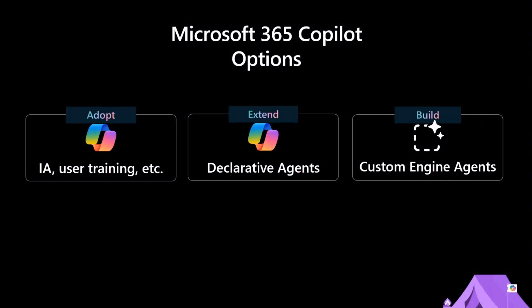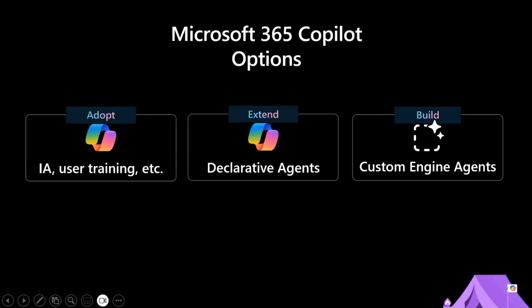Let's look at the options available in agents. This goes back to last year's Ignite and Donna Sarkar, who presented the adopt, extend, and build framework. The idea is you can adopt Copilot just like it is. The prompt samples repo is a great way to learn how to adopt it better and get ideas from other users — community prompts where you can find prompts from other people and get inspiration.